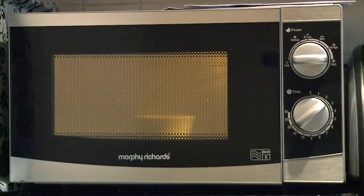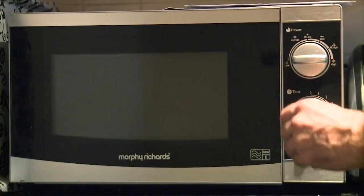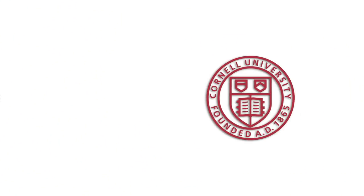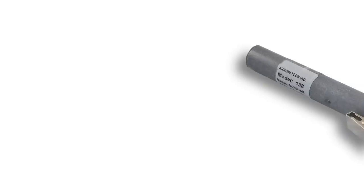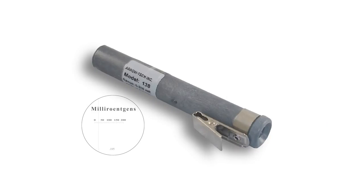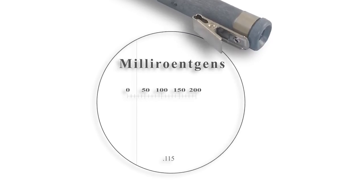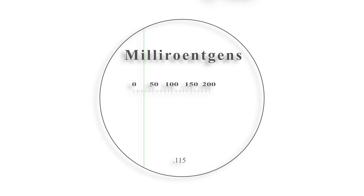Cornell and New York state regulations require that each tour group carries a dosimeter capable of recording minute amounts of radiation. The reading on the dosimeter will remain the same throughout the entire tour. Your safety is our first priority.